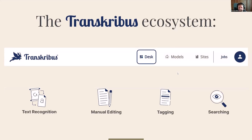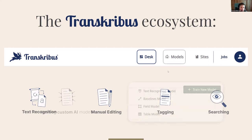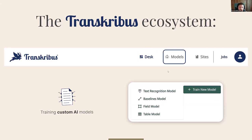Transkribus Desk is basically the core of Transkribus. Here you can do text recognition, manual editing of historical sources, tagging — enriching with metadata — and searching of historical documents. This is the space where the work happens. Then we have the Models workspace, where you can train your own custom AI models. That's one of the biggest advantages of Transkribus. Back when it was still a research project in 2016, it became available — and it was very innovative that you could train your own custom AI models with just a few clicks.